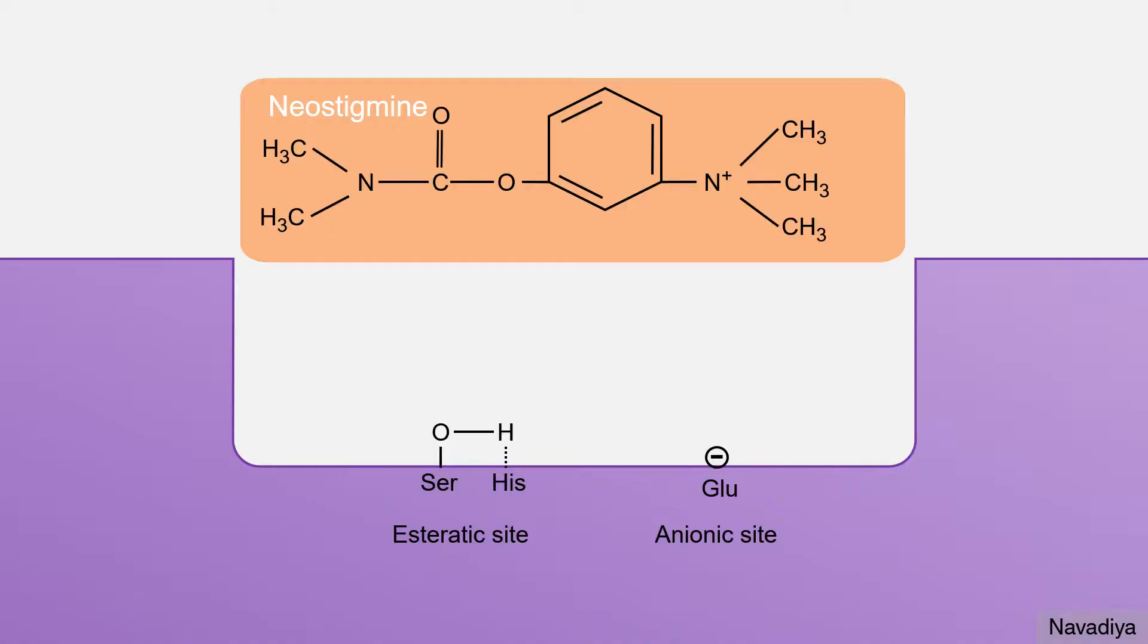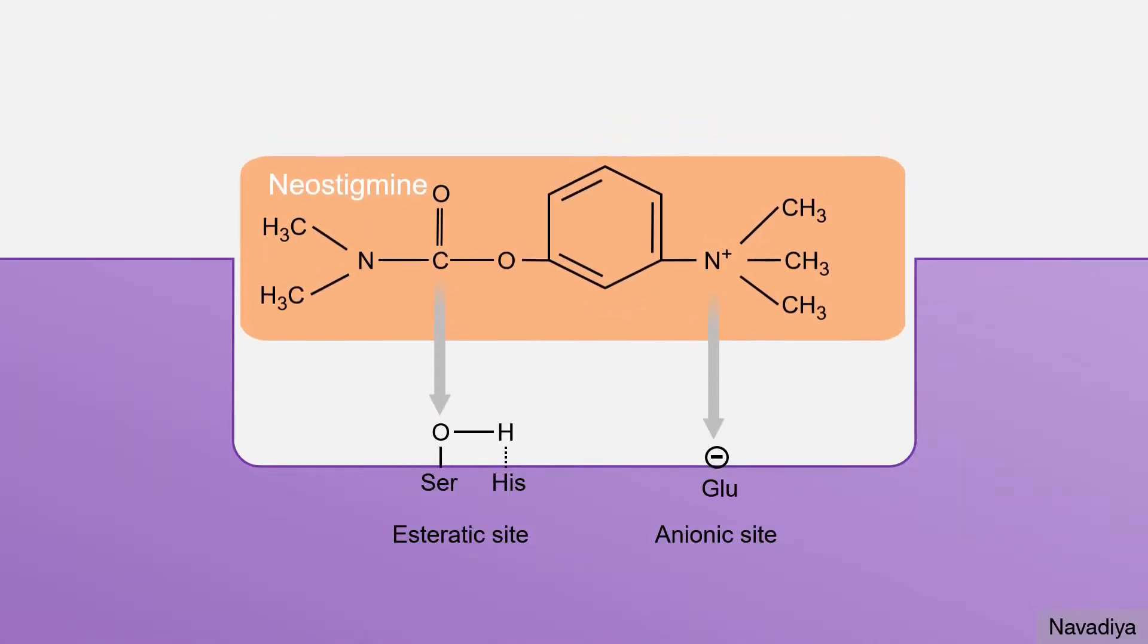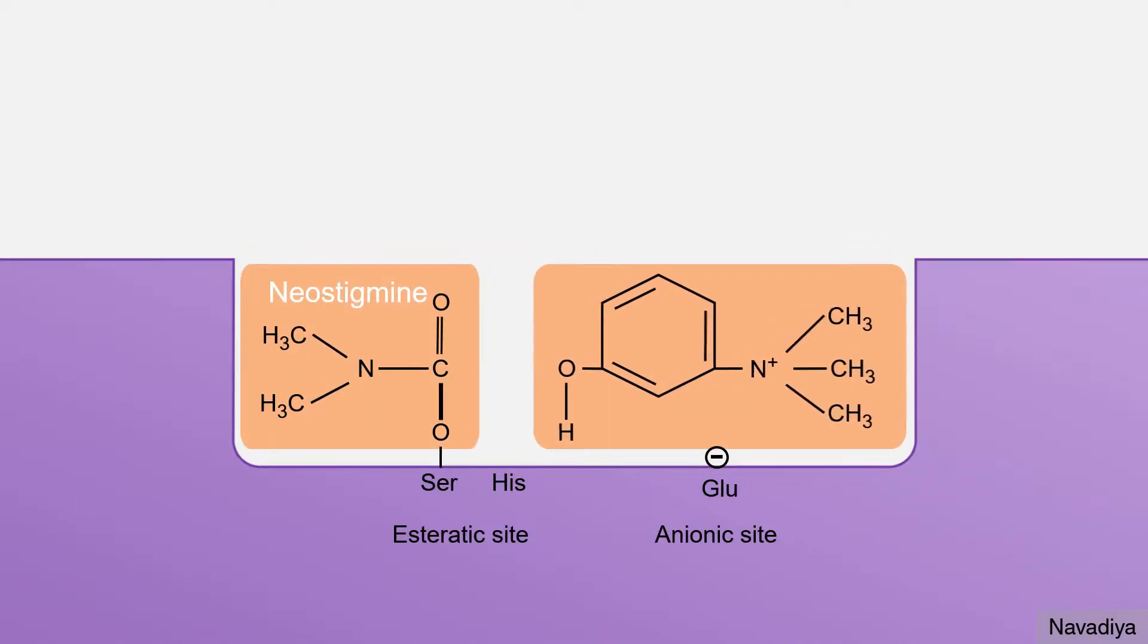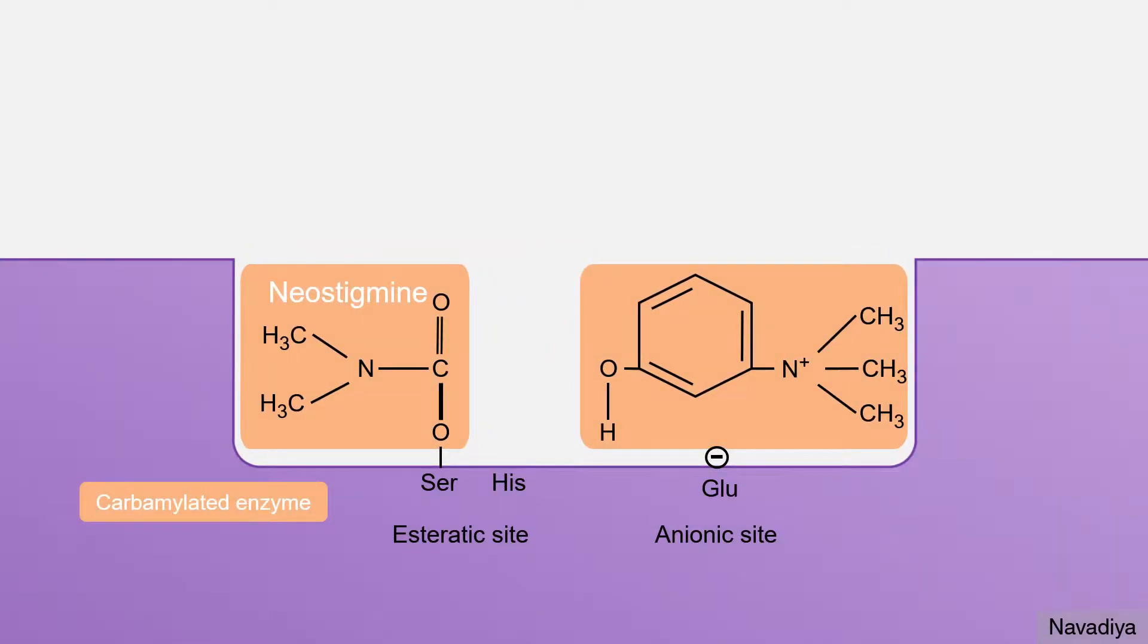Now let's see the drugs with intermediate duration of action. This group of drugs interact with the enzyme in a manner similar to what we saw with acetylcholine. It occupies both the sites. Then the enzyme breaks the drug and carbamylated enzyme is formed.